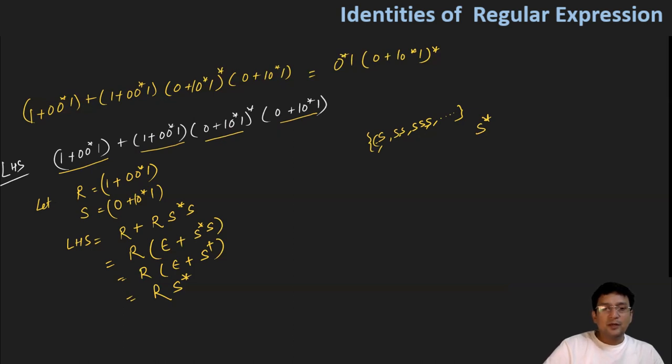Now if we replace these quantities back, r's value is (1 + 00*1) and s* means (0 + 10*1) and its closure.